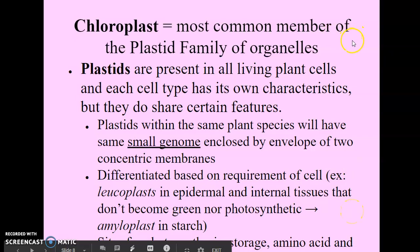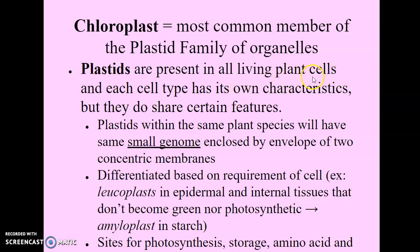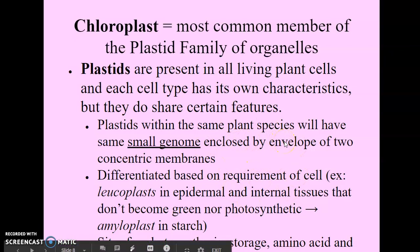The chloroplast is the most common member of the plastid family of organelles. Plastids are a family of organelles characteristic to the type of plant cell; they are present in all living plant cells and each cell type has its own characteristics, but they share certain features. For example, they all have a DNA or genome, and plastids within the same plant species share this same small genome enclosed by an envelope of two concentric membranes — an outer membrane and an inner membrane.